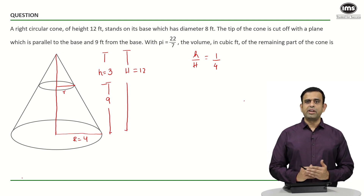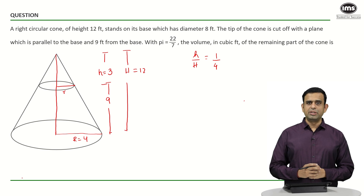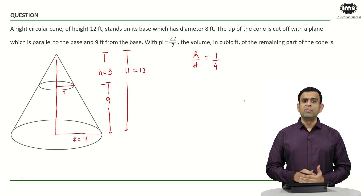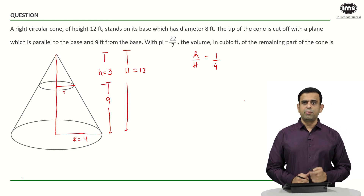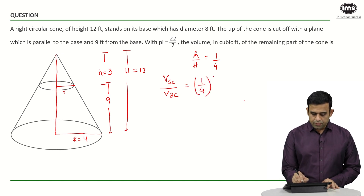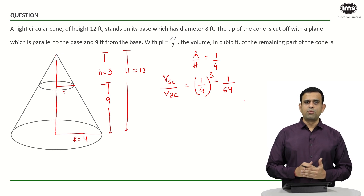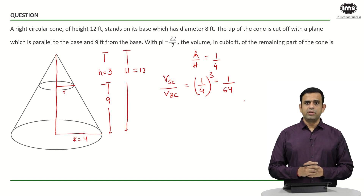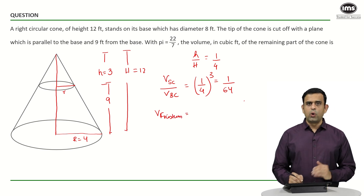If two figures are similar, the ratio of their areas is in the ratio of the square of their sides. Similarly, for two similar cones the ratio of their volumes is in the ratio of the cube of their respective parameters. Since the ratio of heights is 1 by 4, the ratio of the volume of the smaller cone to the bigger cone is 1 by 4 cubed, or 1 by 64. This means if the bigger cone has capacity 64 litres, the smaller cone has capacity 1 litre, and the frustum has capacity 63 litres — that is 63 out of every 64 parts.